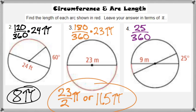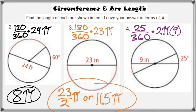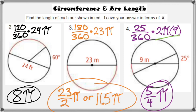Problem four has vertical angles. If the given angle is 25 degrees, then the arc across from it is also 25 degrees since vertical angles are always equal. The fraction 25 over 360 is the part of the circumference needed. Since 9 is written on the radius (not the diameter), use the circumference formula 2 pi r, giving 18 pi. Multiplying 18 pi by 25 divided by 360 reduces to 5/4 pi.